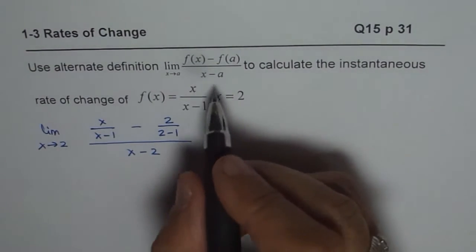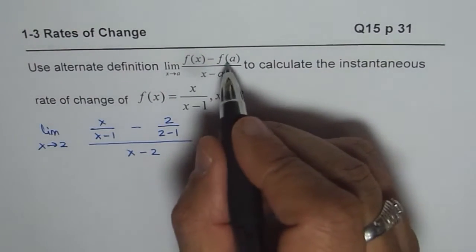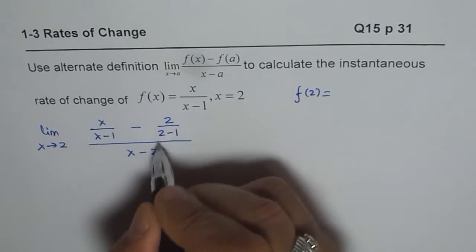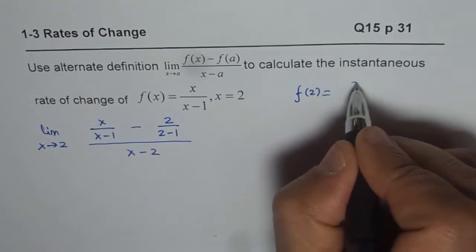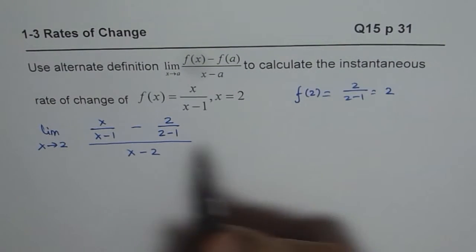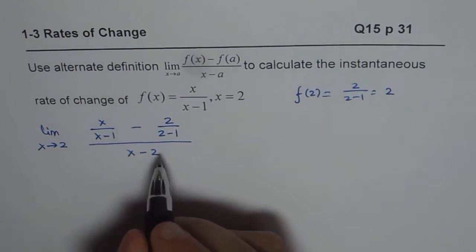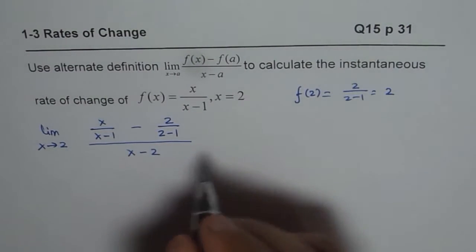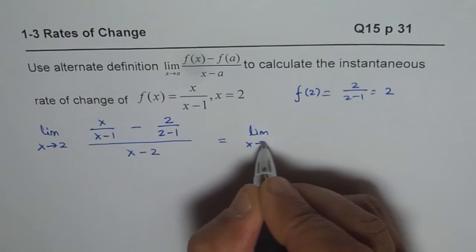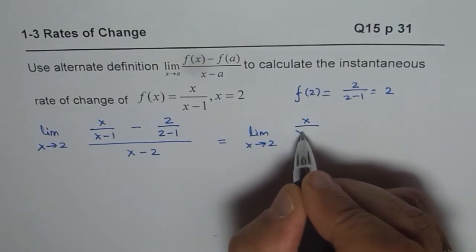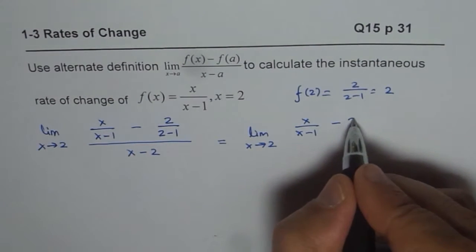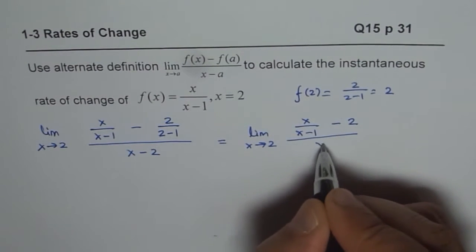Well, at times, it is not a bad idea to find f of a separately also. So, you could write f of 2 and calculate this value separately, which is 2 over 2 minus 1 and that is 2. Anyway, now, let us simplify this. We could write this as limit x approaches 2 and we get x over x minus 1 minus 2 over 1 is 2 over x minus 2.